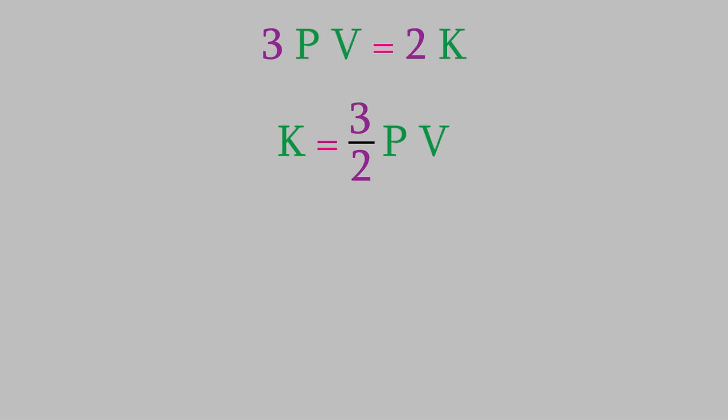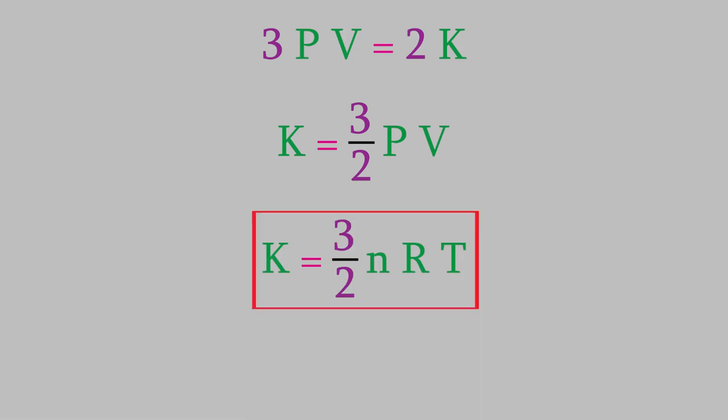And if we're dealing with an ideal gas, we can make it even simpler. We can use the ideal gas law to replace PV with nRT, which gives us an incredibly simple equation: it tells us that if we have n moles of gas, the kinetic energy just depends on the temperature, which is very easy to measure.